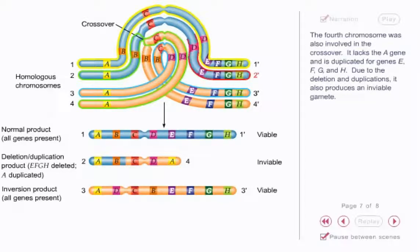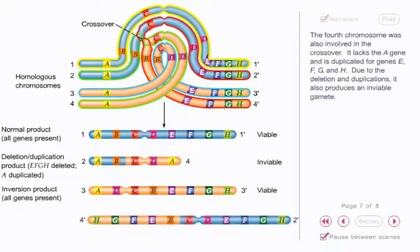The fourth chromosome was also involved in the crossover. It lacks the A gene and is duplicated for genes E, F, G, and H. Due to the deletion and duplications, it also produces an inviable gamete.